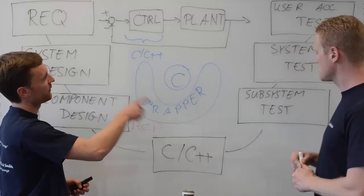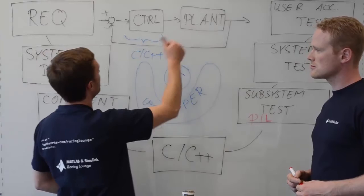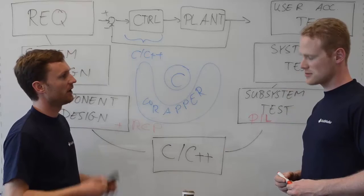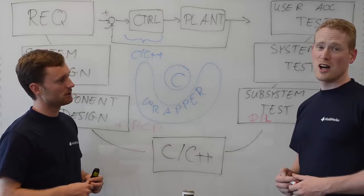While Andreas is writing processor-in-the-loop down, we can just give a simple comparison here or a simple example. We make sure that the controller is running on the board and all the rest, the plant and the control algorithm as such, is running on our computers, on our notebooks. This makes sure that the control algorithm we have developed is running nicely on our desired board. Perfect. Makes sense.